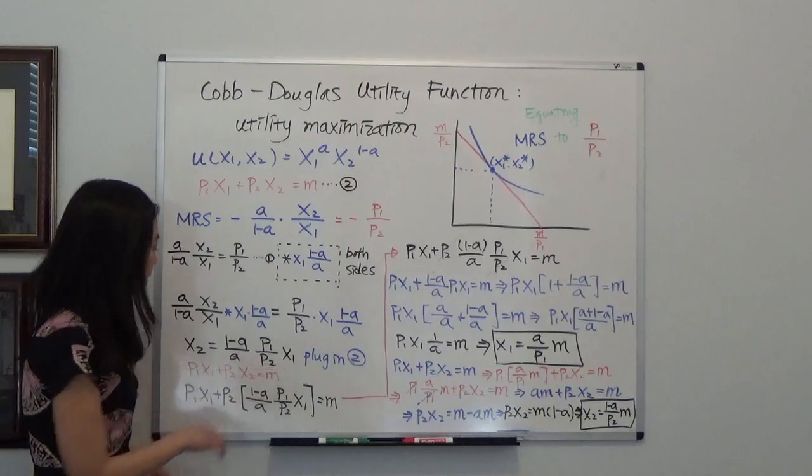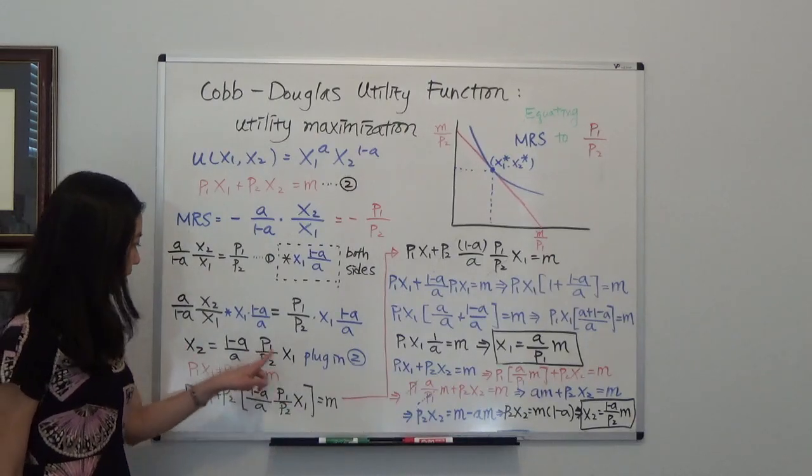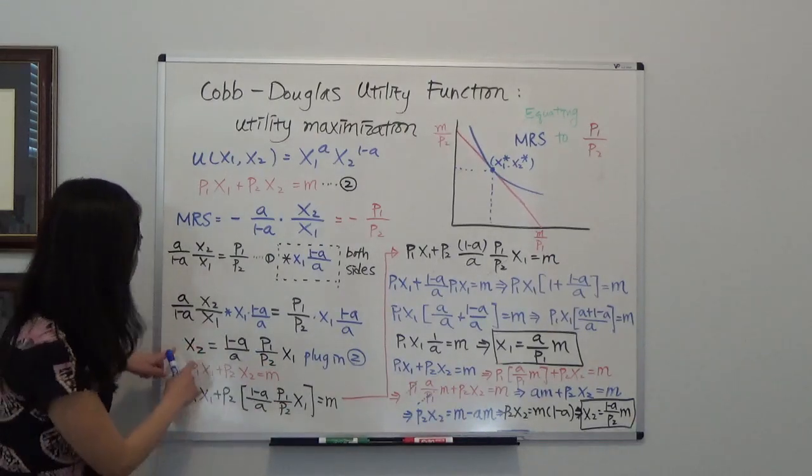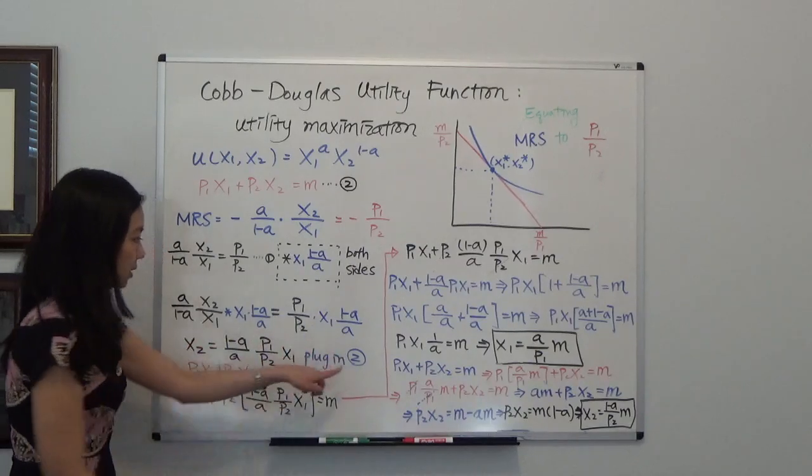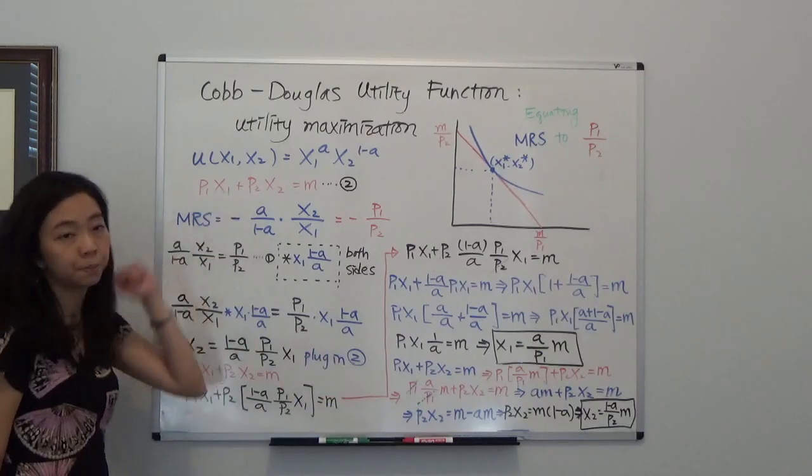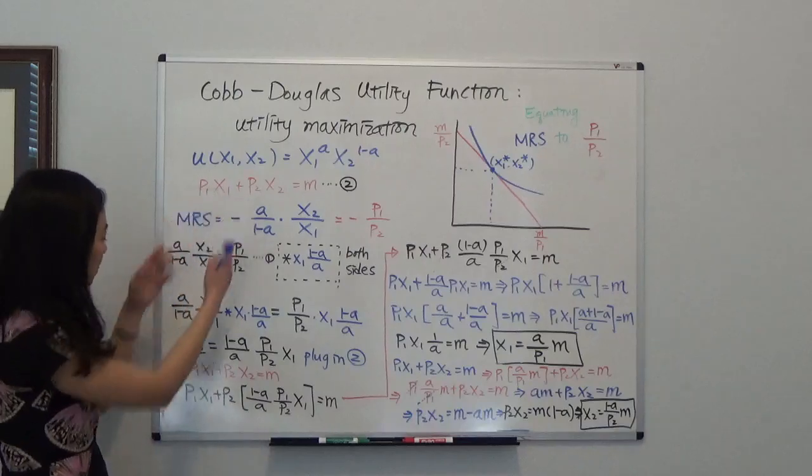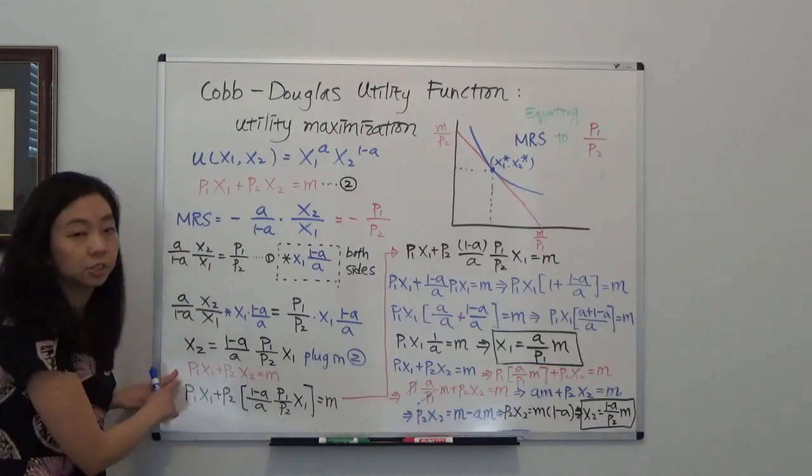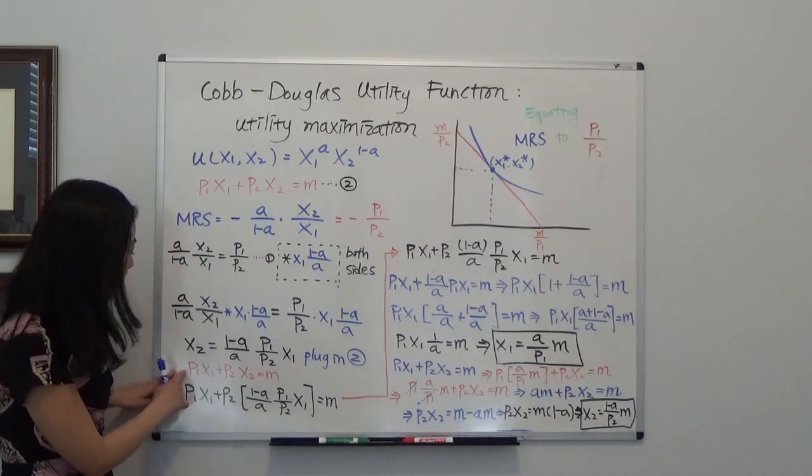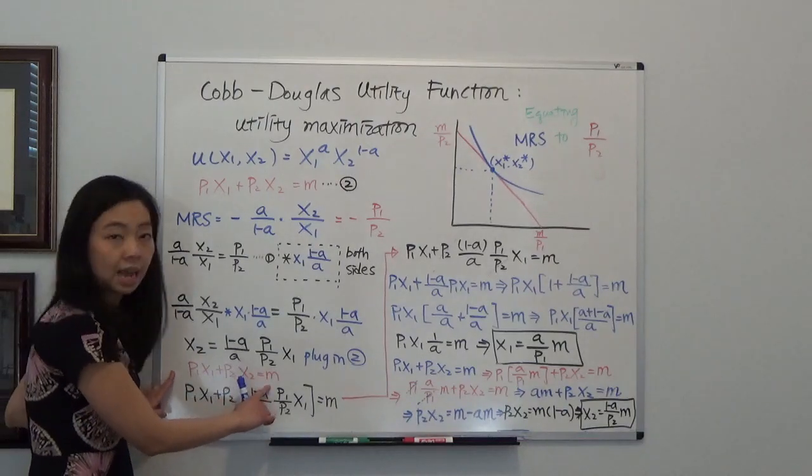So I have a relationship between x1 and x2. So I'm going to plug this term into the second equation, which is our budget constraint. So where is our budget constraint? I'm just going to move it down. I didn't change it at all.